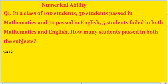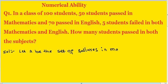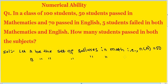Let A be the set of failures in mathematics. That is, number of A equal to 50. Let B be the set of failures in English. That is, number of B equal to 30.